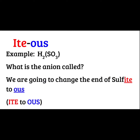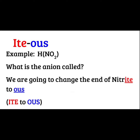Next, we have polyatomic ions that end with -ITE; we change those endings to -OUS. So here I have sulfite, SO3 negative 2, so sulfite would change to sulfurous acid — not sulfis, it's going to be sulfurous. That's one of those things that just takes practice and time to figure out. Next I have HNO2; NO2 minus one on your polyatomic ion list is called nitrite. We're going to change the ending to -OUS, so that's nitrous acid.